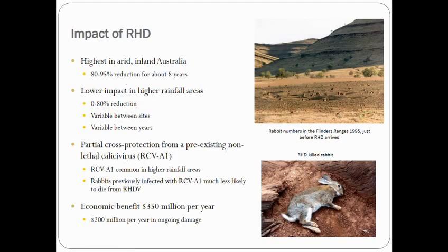Its impact was highest in the arid inland areas where rabbits were formerly uncontrolled and responsible for a lot of the total grazing pressure. In higher rainfall areas, the impact was lesser and more variable, largely due to the presence of a pre-existing non-pathogenic calicivirus which provided some degree of antibody cross-protection against RHD.